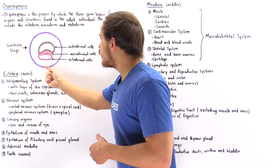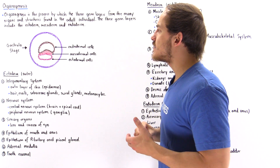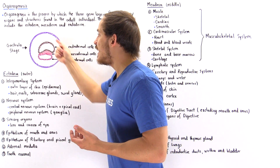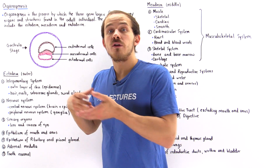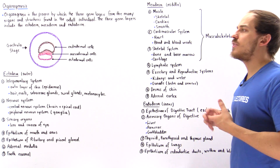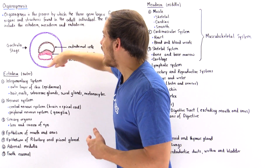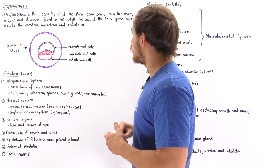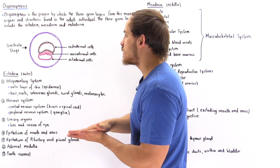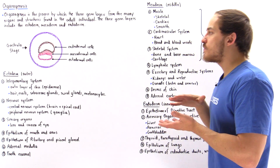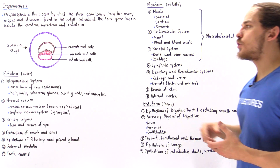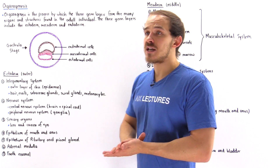Looking at the diagram, we begin with the outermost cells known as trophoblast cells. These trophoblast cells eventually give rise to the chorion and the placenta, while all the inner cells make up the three different germ layers. These germ layers eventually give rise to all the different structures, organs, tissues, and systems found in the adult human. Inside the gastrula, we have three cell types: the light purple ectoderm cells, the red mesodermal cells making up the middle mesoderm layer, and the brown cells making up the endoderm germ layer. Each germ layer gives rise to many different types of structures and organs.